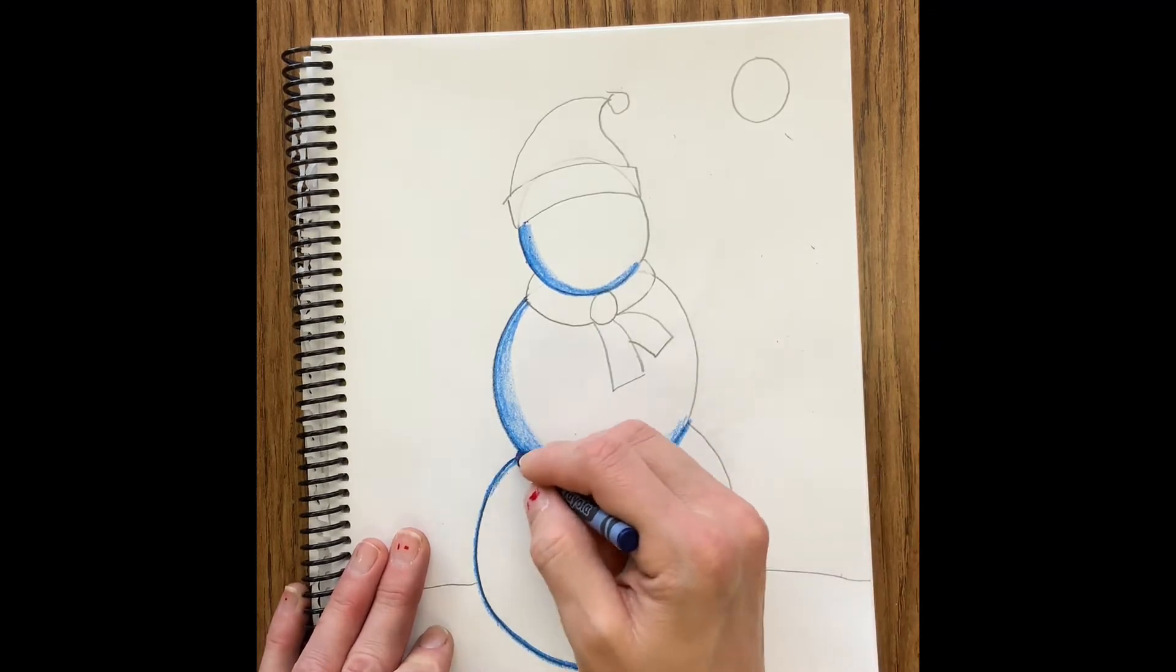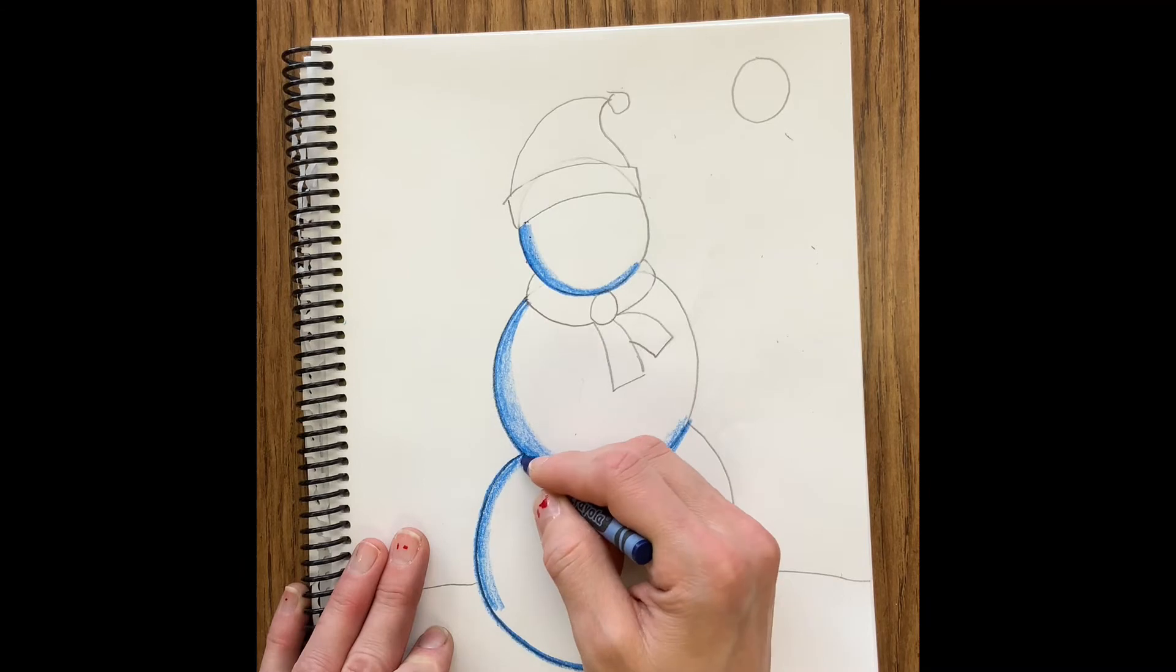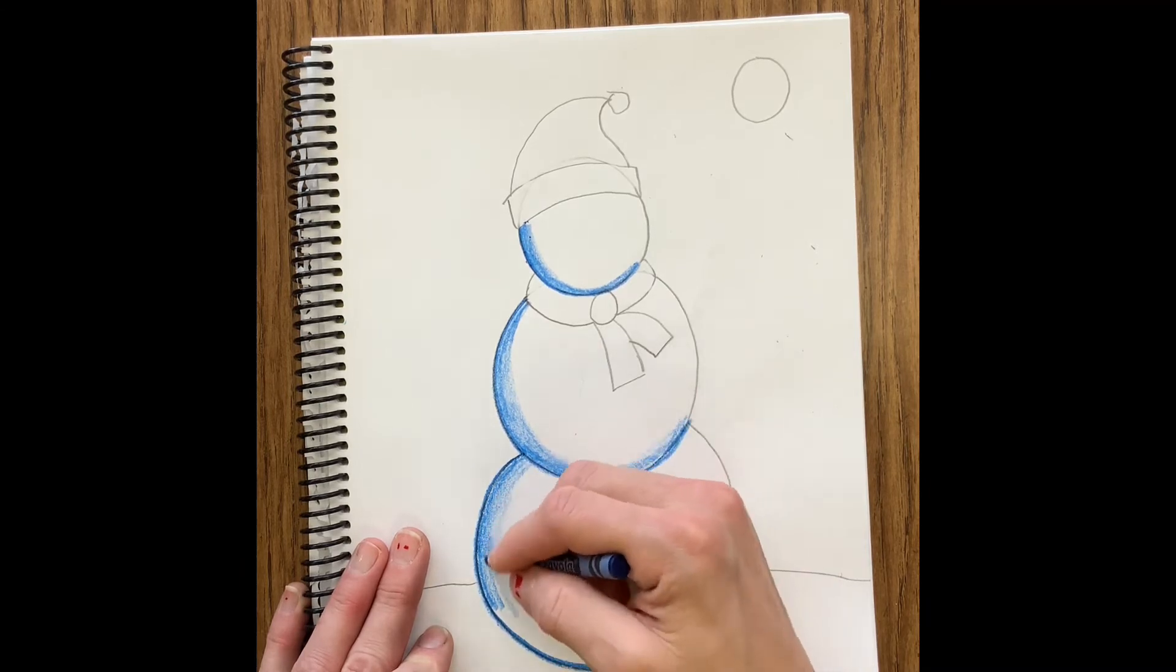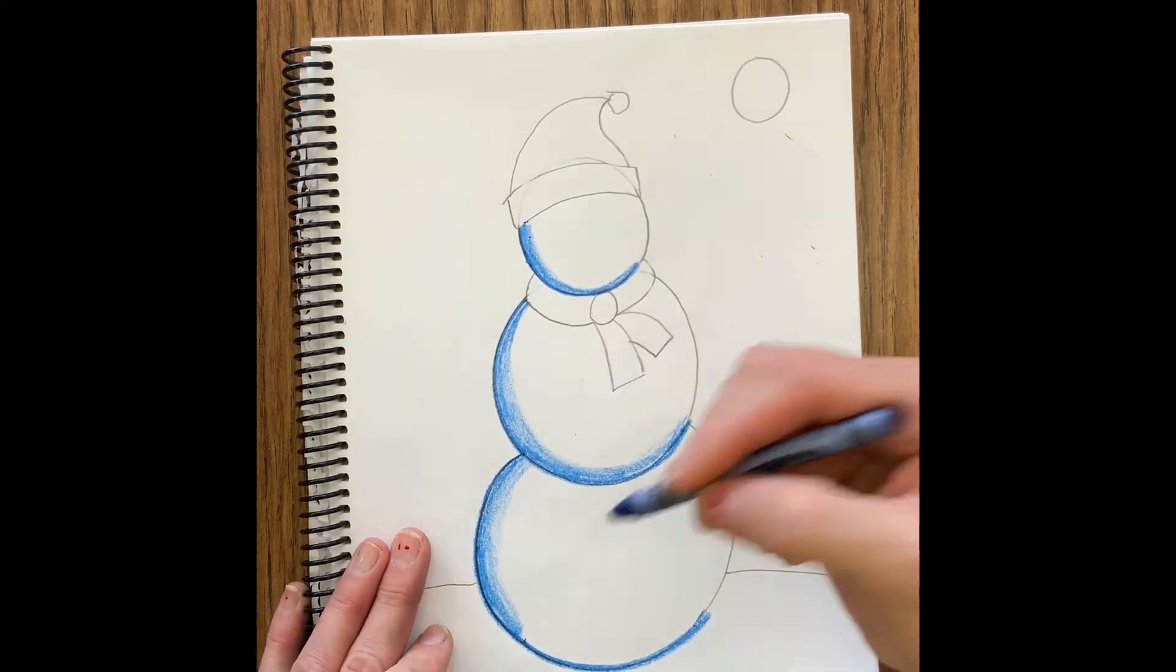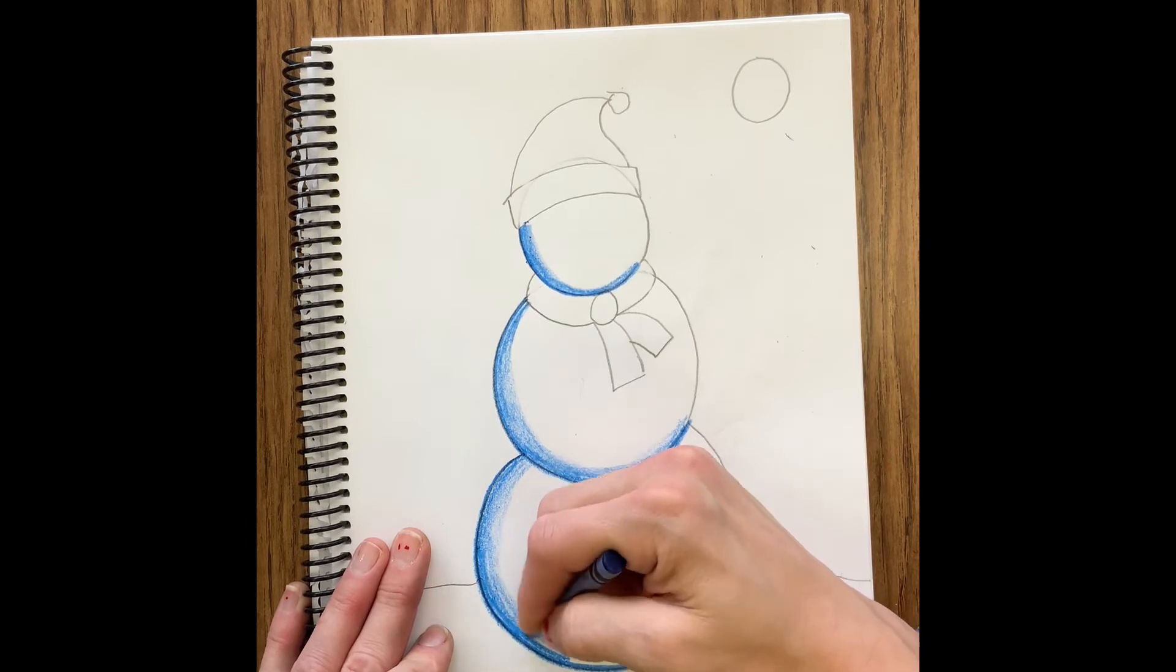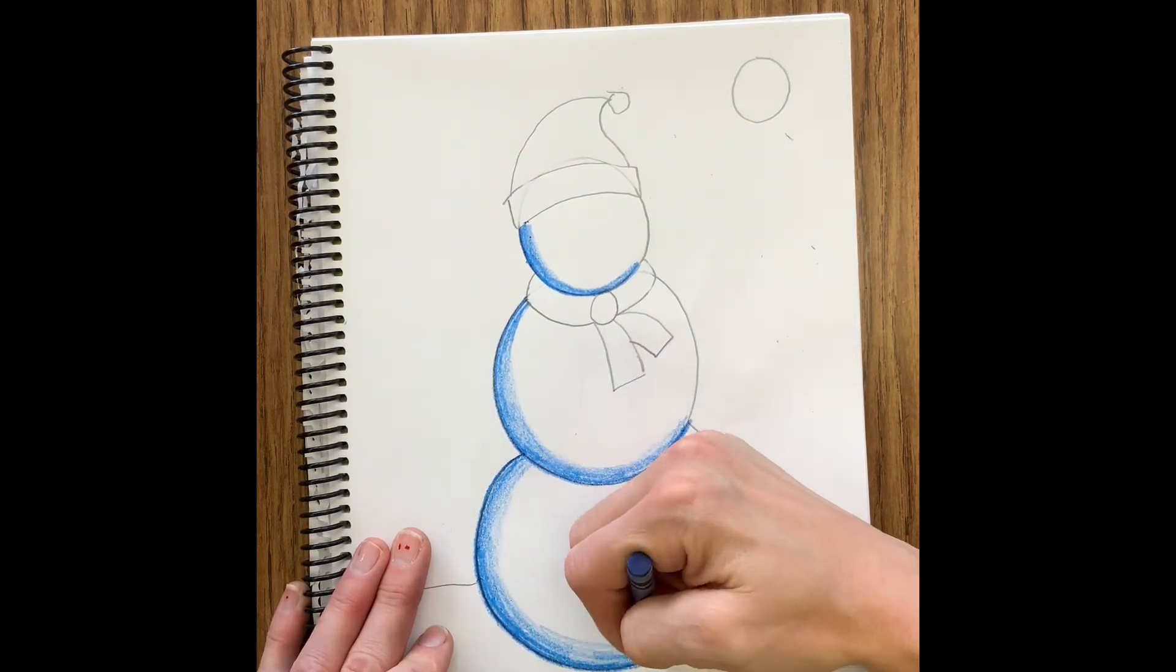I am coloring hard right on that line and then as I get farther out into the snowball I am pressing lighter so that I don't leave as much color on the page. I'm trying to get that value, that dark to light, to show up.